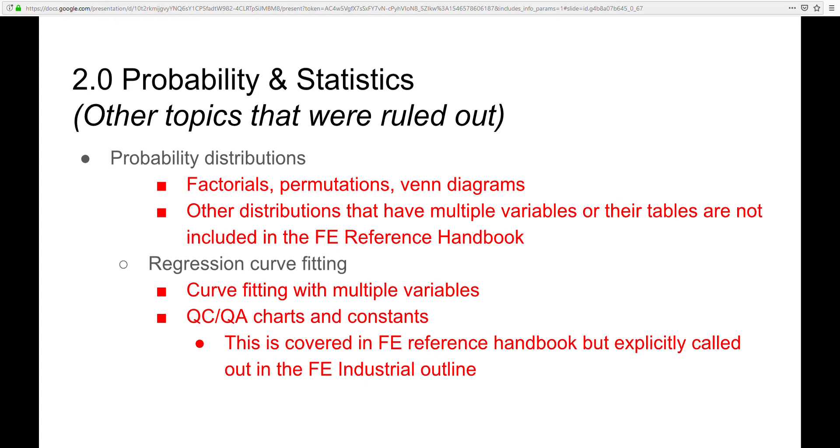For regression curve fitting, similarly, we took out complex things like curve fitting with multiple variables. And we also took out the QC/QA charts and constants, which are covered in section 15. It's not explicitly called out in the probability and statistics section of the FE mechanical handbook outline, but it is specifically called out in the FE industrial outline under probability and statistics. So this stuff could be covered later in a different section.